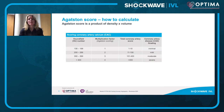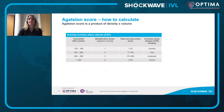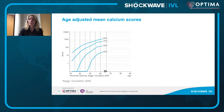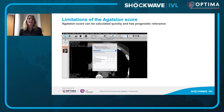The Agatston score is calculated by multiplying the highest attenuation value — the highest density — by the area or volume of the calcification. For example, if you have a calcified speck with a max attenuation of 400 Hounsfield units that occupies an eight square millimeter area, you will have a calcium score of 32. You then sum up every calcified speck throughout your coronary tree to give the total calcium score. The age-adjusted mean calcium score throughout the population obviously increases with age.